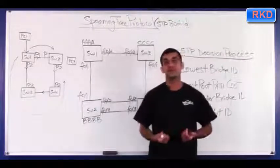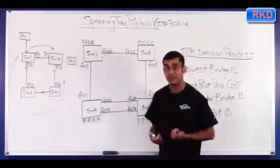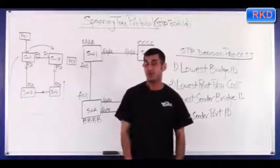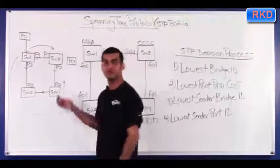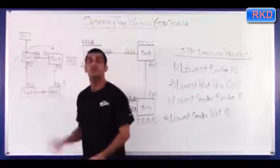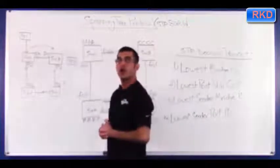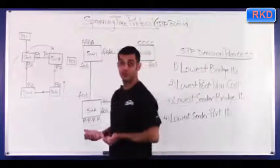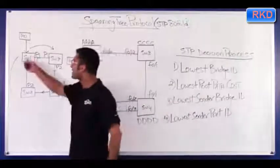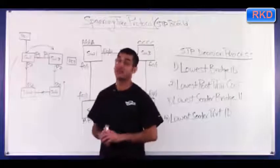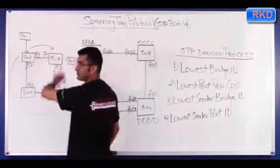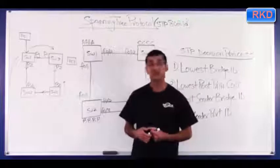This eats up bandwidth unnecessarily, and eventually if PC1 keeps transmitting frames to PC3 not knowing that PC3 is gone, enough frames will gather and start looping around the network that switches 1, 3, 4, and 2 will start crashing. This is called a layer 2 loop, or sometimes a broadcast storm. If PC1 sends out a broadcast, that broadcast gets flooded out all ports, and frames will loop in both clockwise and counterclockwise directions, continuing to loop until these switches crash.